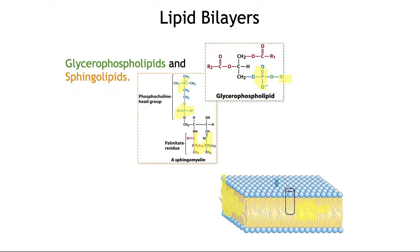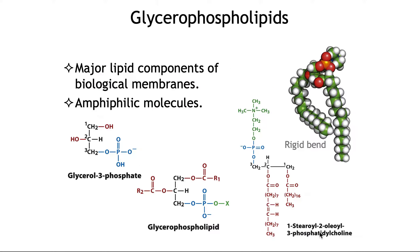The polar charged head groups will be on either side of the lipid bilayer. Glycerophospholipids and sphingolipids are two major components of the lipid bilayers. We'll start by taking a look at glycerophospholipids.